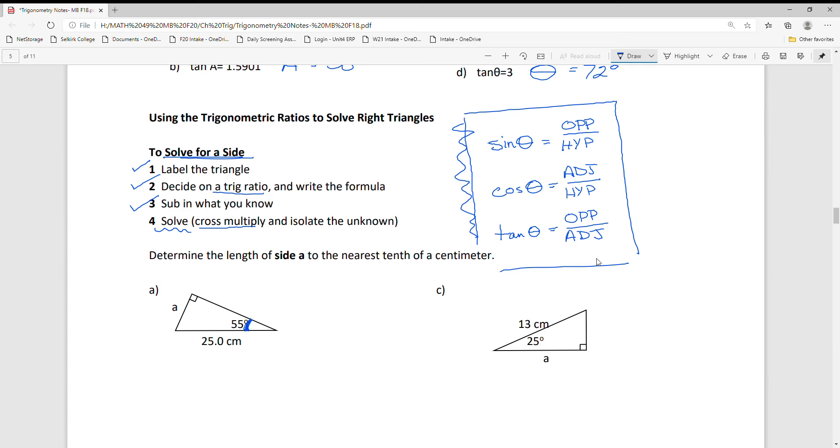In labeling A, 55 is my reference angle. Side A would be opposite, and 25 is my hypotenuse. When I have opposite and hypotenuse, I use the sine theta formula. Sine of 55 equals A over 25.0. In solving for A, I multiply both sides by 25, so A equals sine 55 times 25.